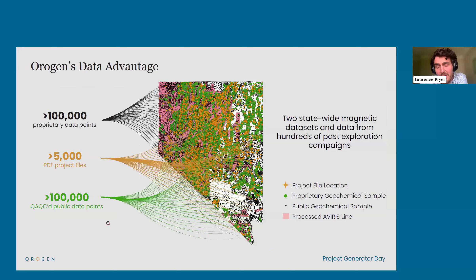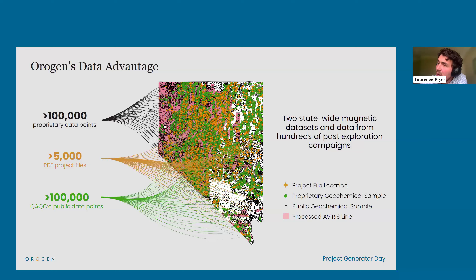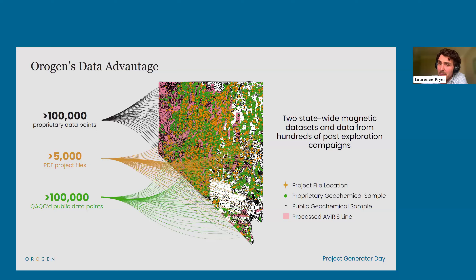Origin has an incredible wealth of data. In Nevada alone, we have over 100,000 proprietary geochemical analyses with an additional 100,000-plus integrated and quality-controlled public data points. The database also contains 5,000 PDF project files, two state-wide magnetic datasets, and reports from hundreds of past exploration campaigns. Mark Kulba has also processed all the AVIRIS data available — high-resolution spectral data flown by NASA covering over half the state — producing atmospherically corrected mineral maps for more than 10 minerals, as well as multiple crystallinity and strength indexes. Combining these datasets into a prospectivity model has been the basis of an alliance with Altius for the last three years.